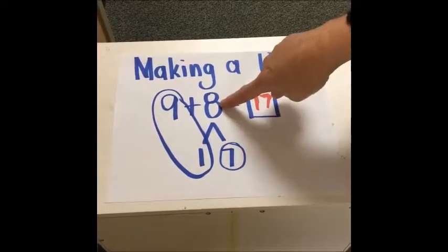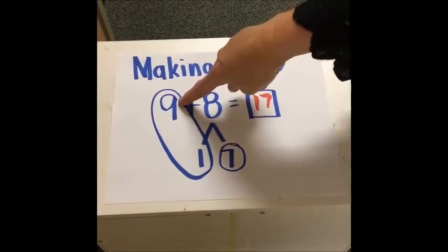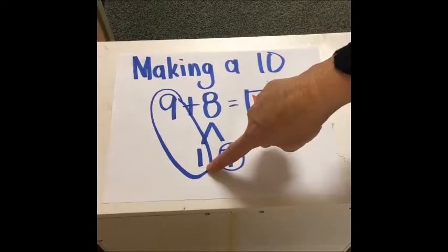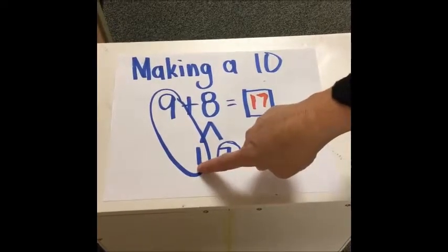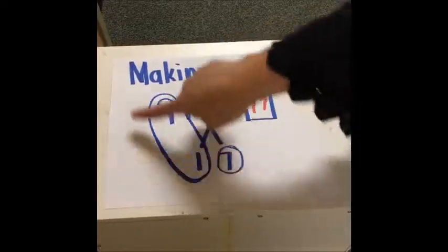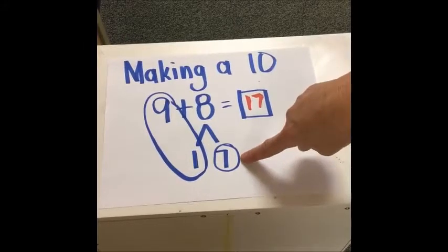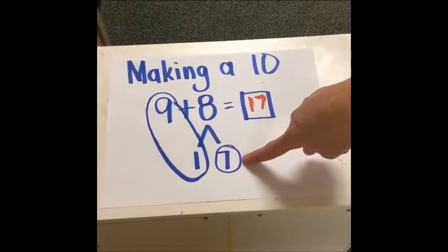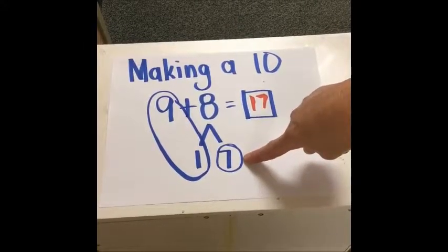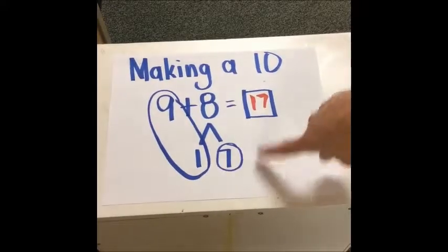So for 9 plus 8, we need 1 from the 8 to pair with 9 to make 10. The 1 goes with the 9, so students now have 9 plus 1 is 10, and whatever is left over added to that is an easy fact because they know teen numbers. So 10 plus 7 is 17.